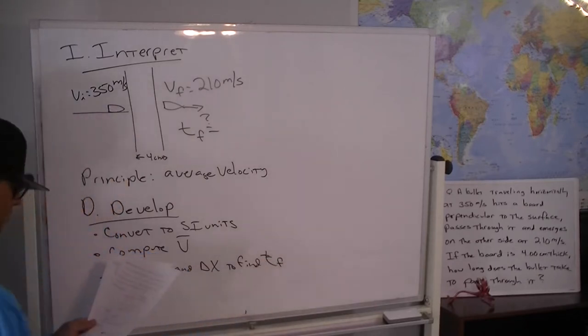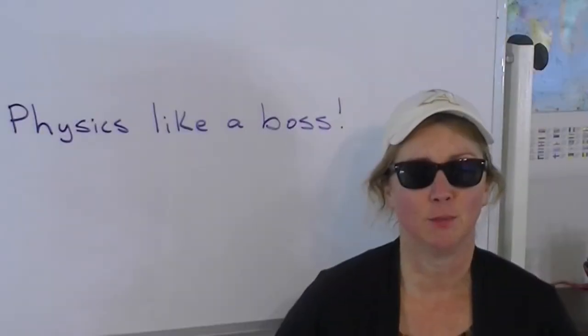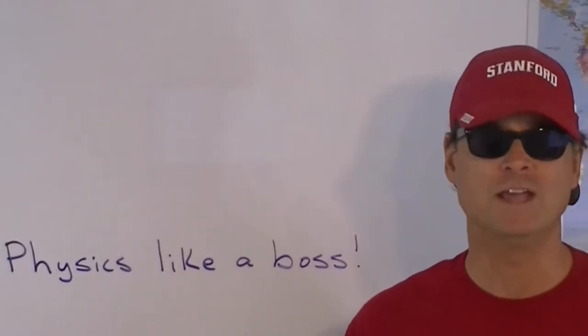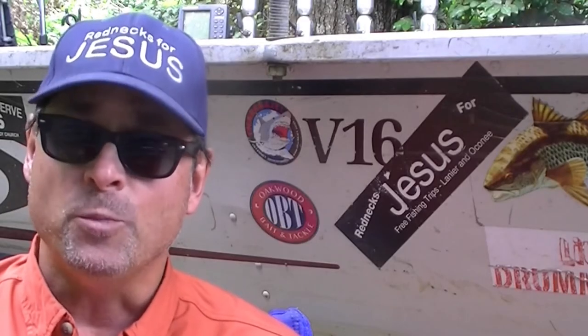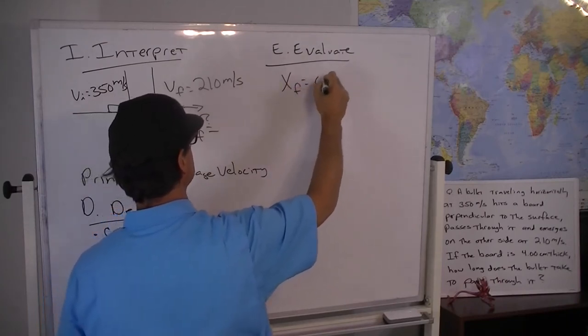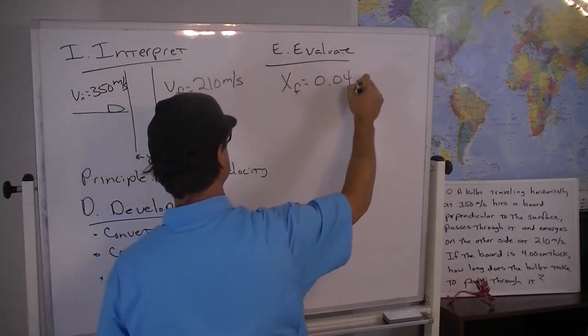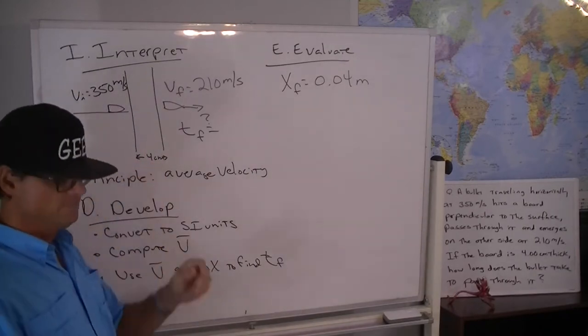Okay so now to evaluate. Science is a gift from God to help us master nature but sin added thorns and thistles requiring the sweat of your brow to succeed. Go ahead and compute x final is equal to 0.04 meters because to convert centimeters to meters you just divide by 100.